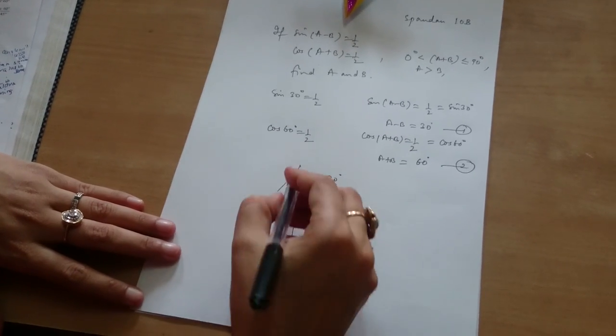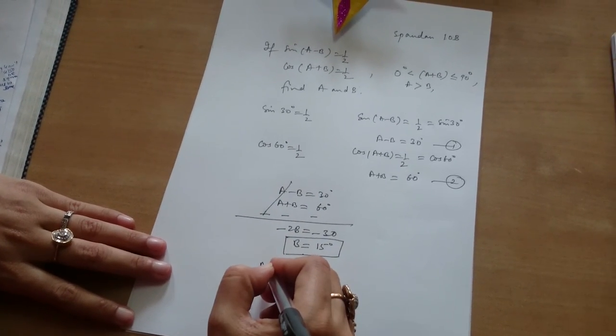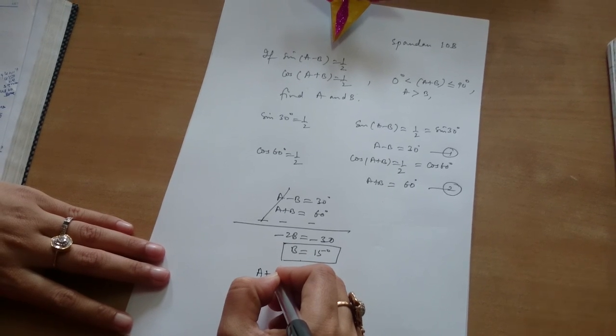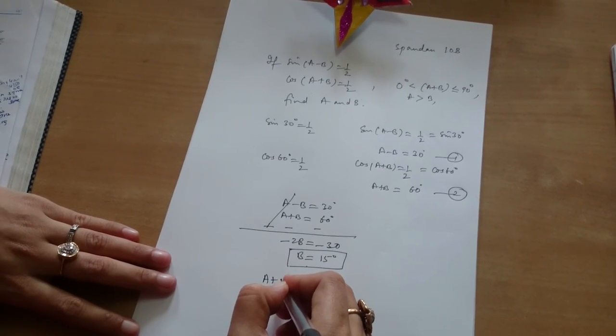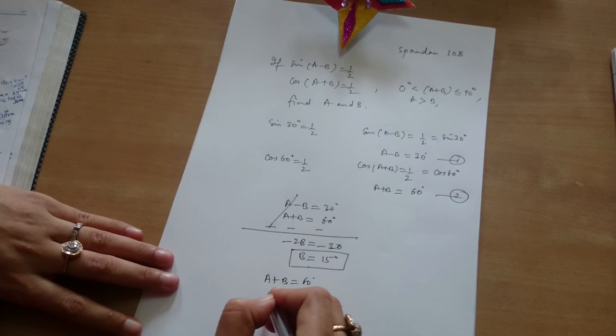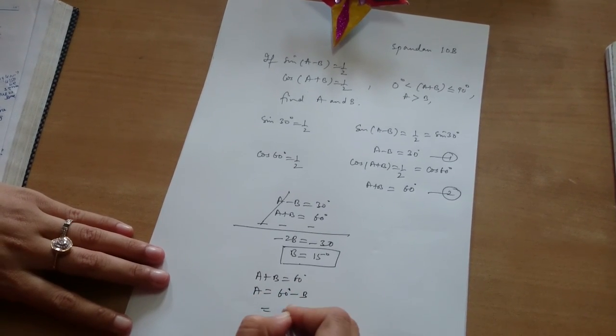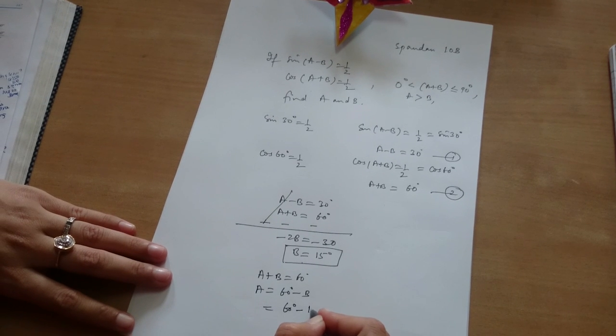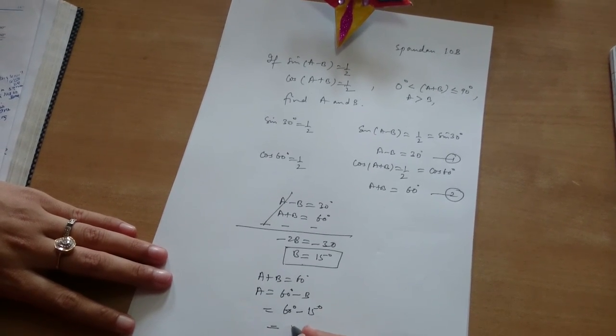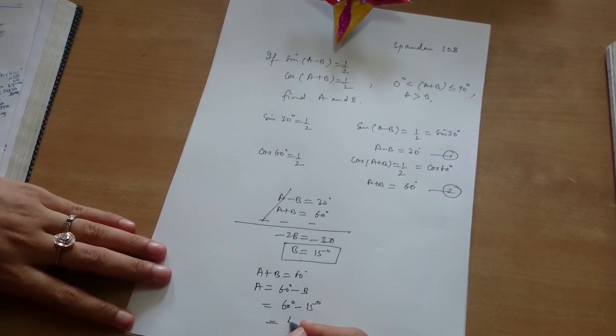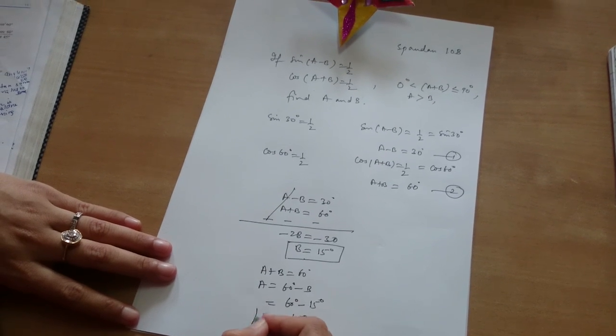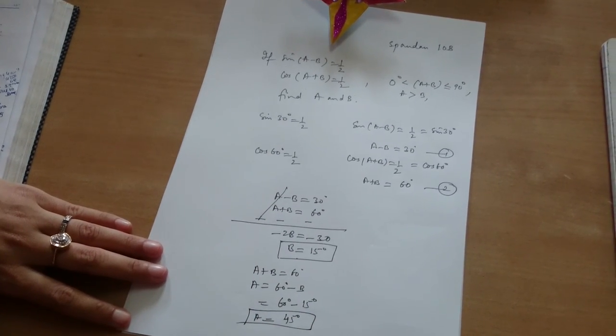And what will be a then? If b is 15, putting the value of b in equation 2, a plus b is 60 degrees. So a is equal to 60 degrees minus b, that is 60 degrees minus 15 degrees, that is 45 degrees. So a is 45 degrees and b is 15 degrees. Good job.